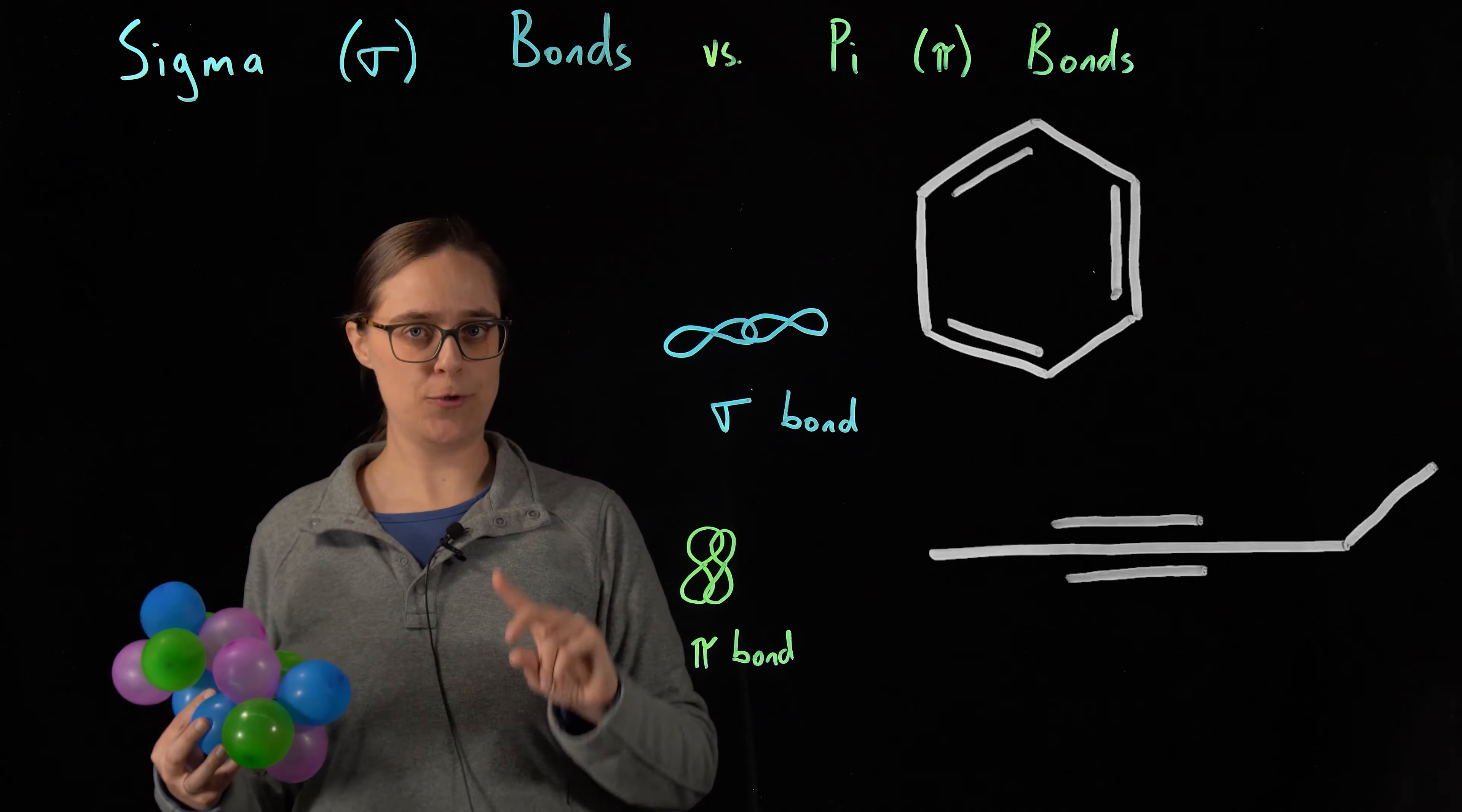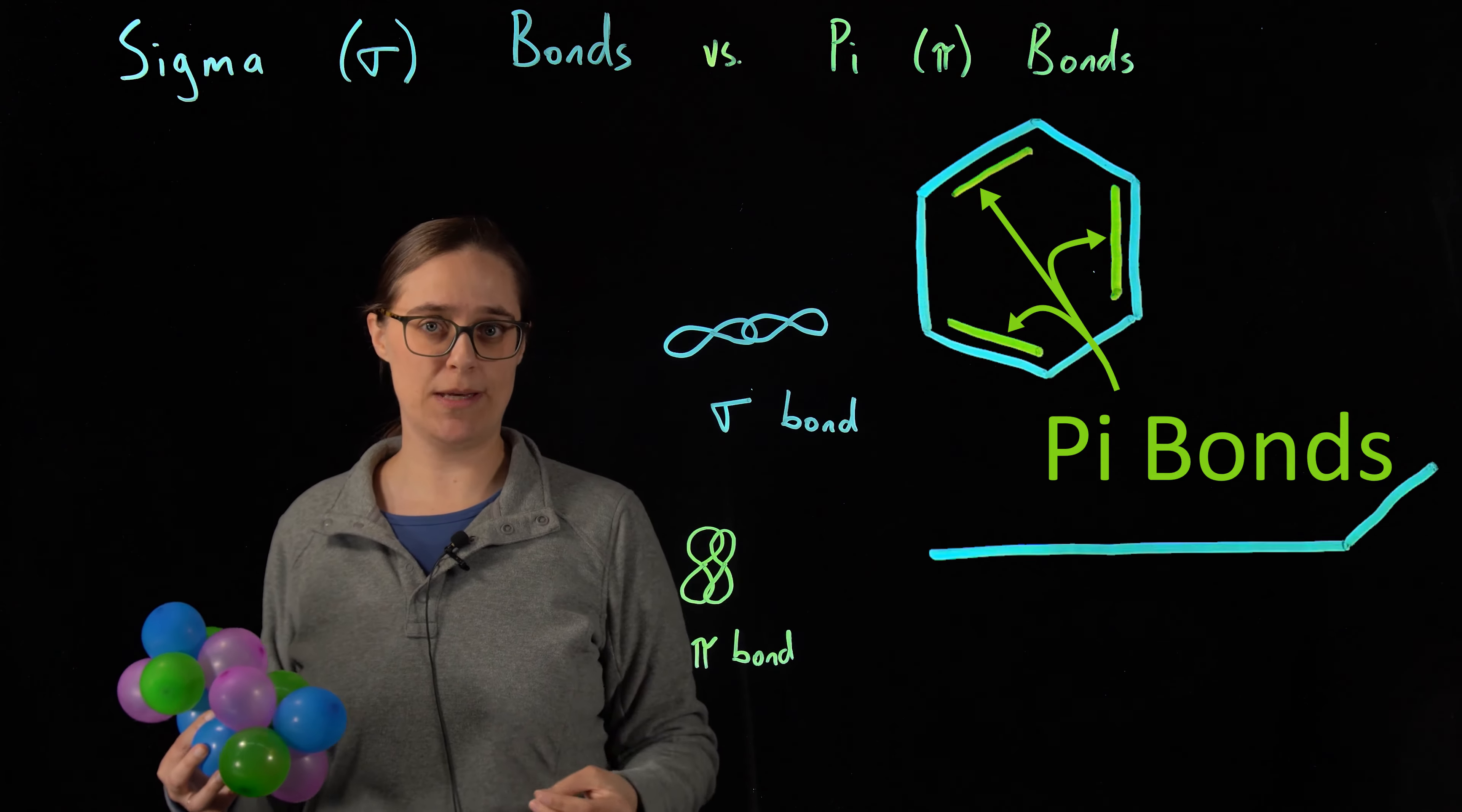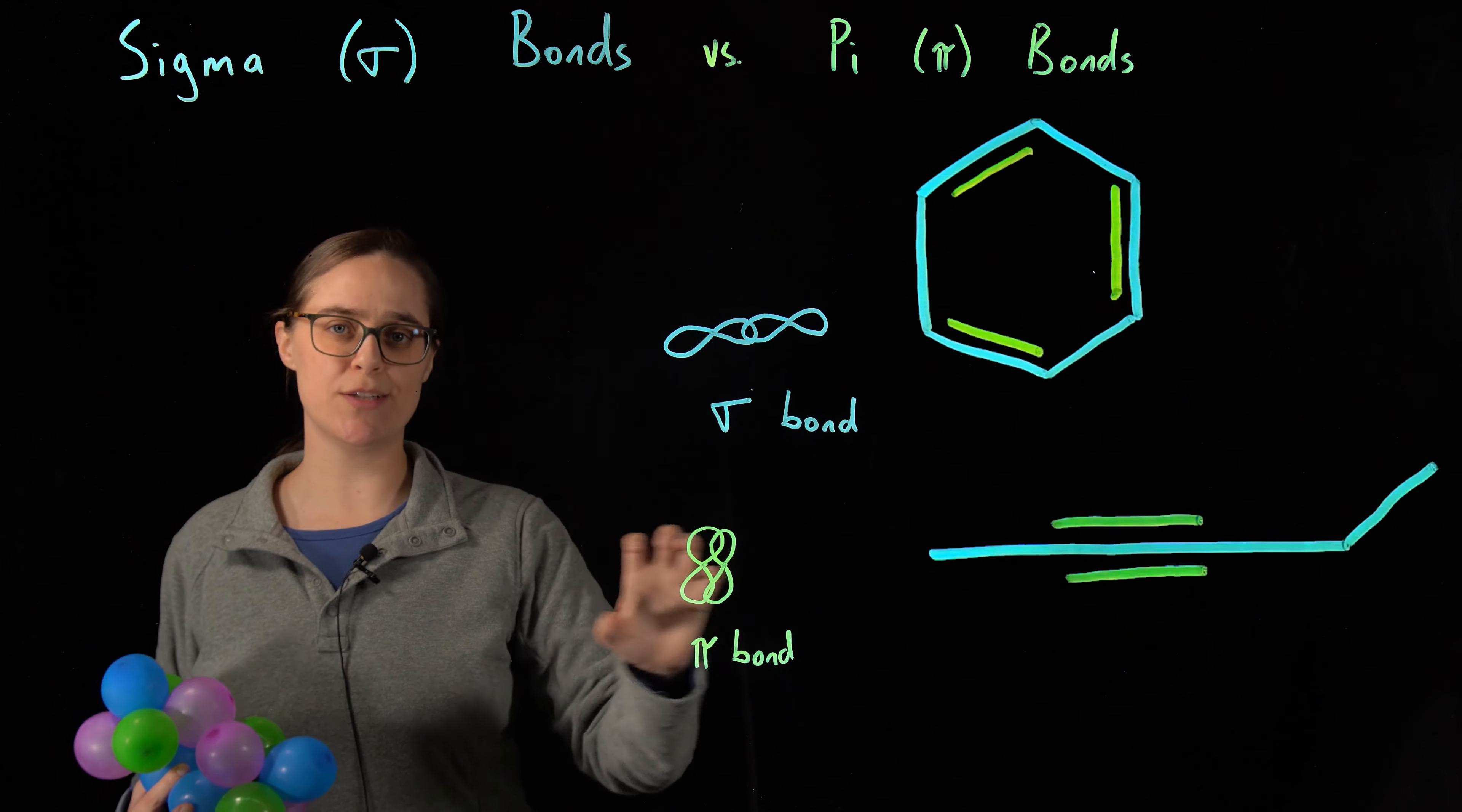So if two atoms have only one bond between them, it's a sigma bond. If they have a double bond, there's one sigma bond, one pi bond. If there's a triple bond, it's one sigma bond, two pi bonds. So in any bond, there is always one sigma bond, and additional bonds are pi bonds. So you can do it. Let's get started.